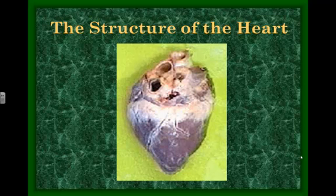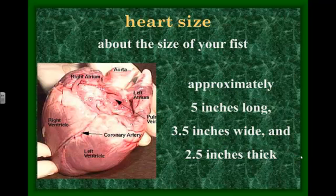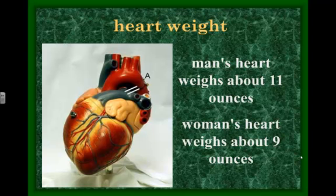Now the structure of the heart. Look at your fist — that's approximately the size of your heart. The average adult heart is about five inches long, three and a half inches wide, and two and a half inches thick. On average, a man's heart weighs about 11 ounces — not quite a pound — and a woman's heart weighs about nine ounces, closer to a half a pound.